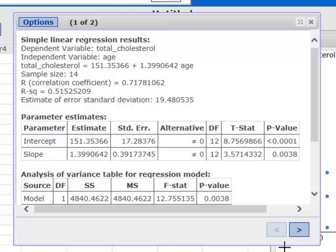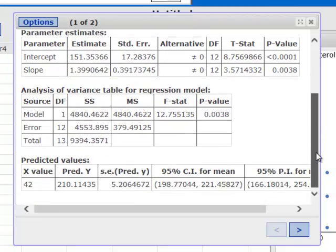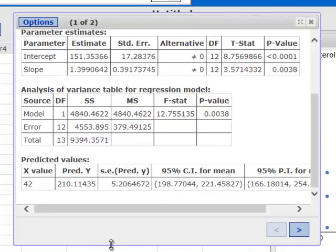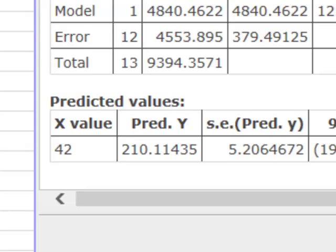And here's our regression output again. If we scroll down to the bottom, we're going to get in the Predicted Value section when X equals 42, our predicted Y is about 210, just what we had calculated by hand.